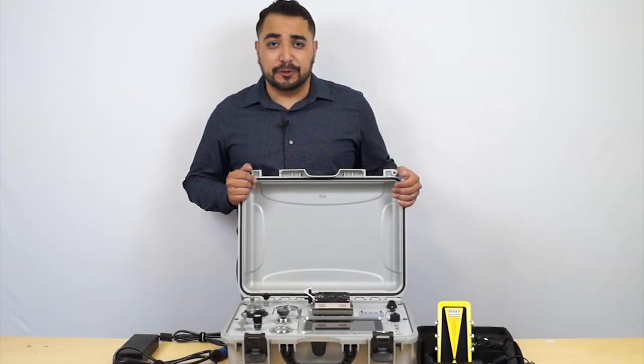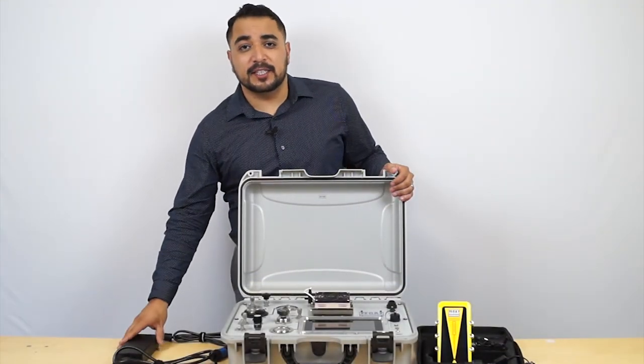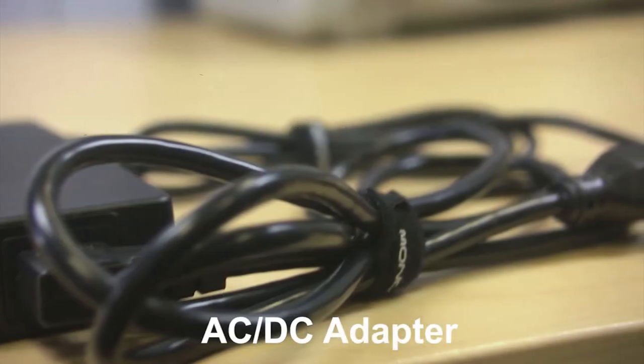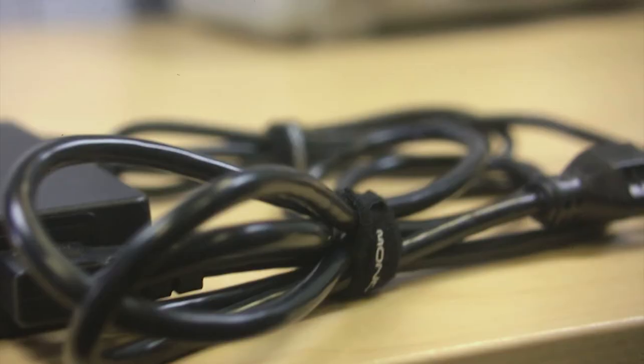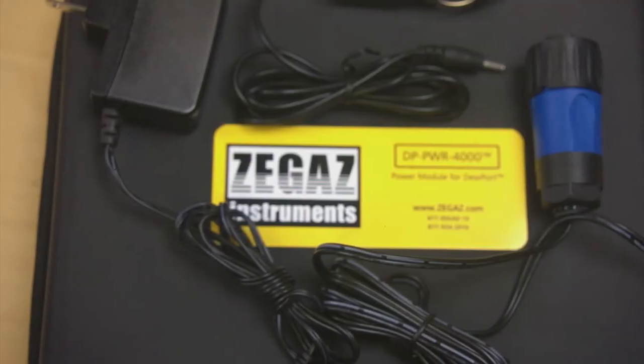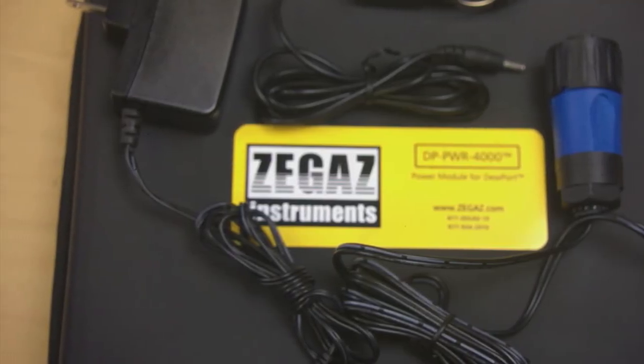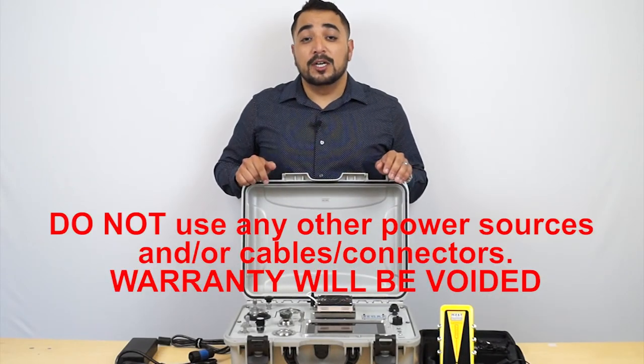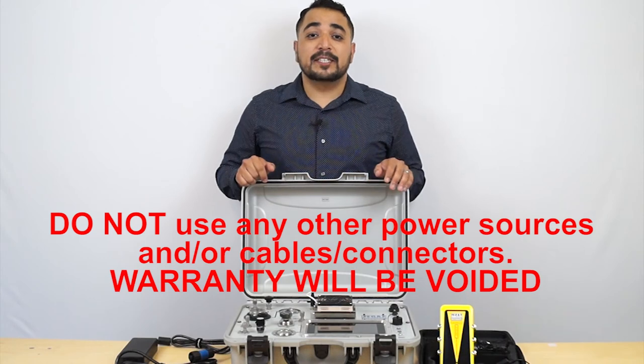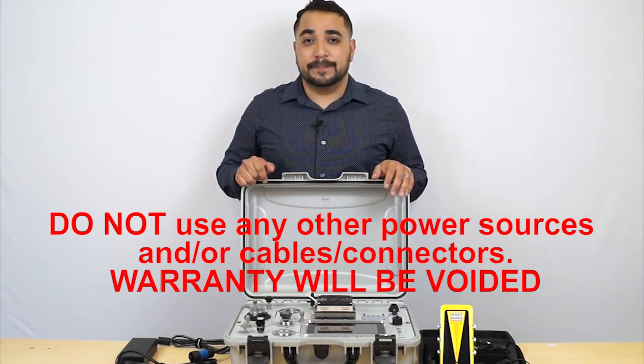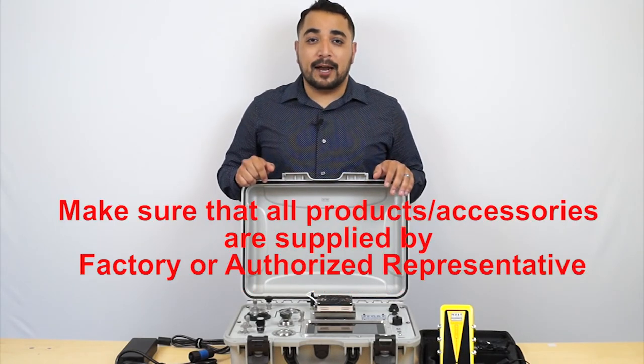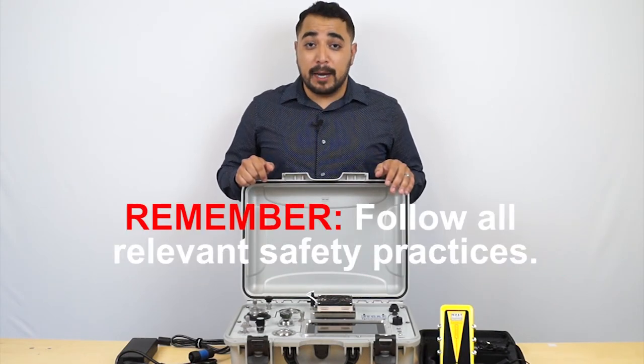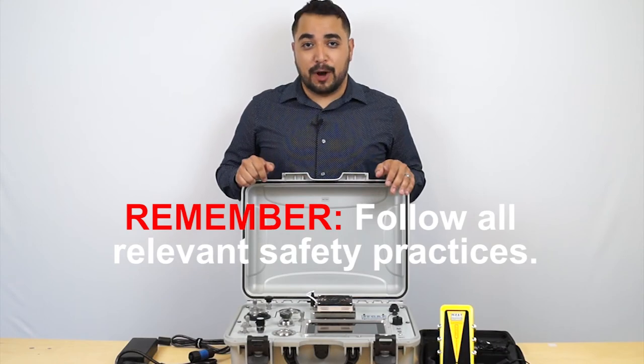The other option for powering the DuPort is to use the AC-DC adapter. You can plug this adapter into any AC source from 100 to 240 volts. The adapter also comes with all the necessary cables to connect to the unit. Do not connect the DuPort to any other power sources. Do not use any other cables or connectors as this may damage the unit and void the warranty. Make sure all cables, batteries, and power supplies are supplied by the factory or an authorized representative. And remember to follow all relevant safety practices.